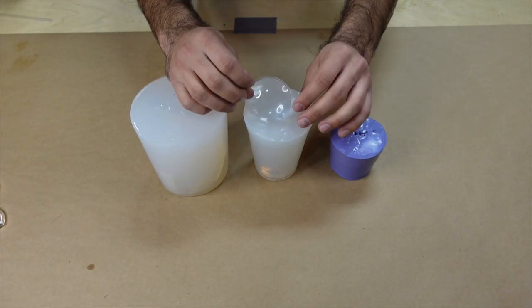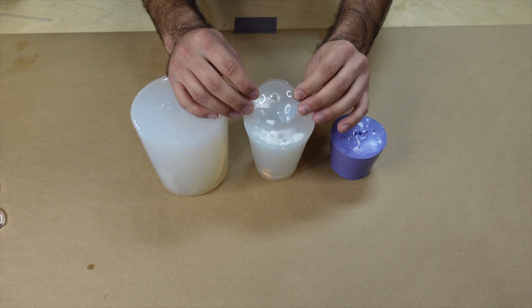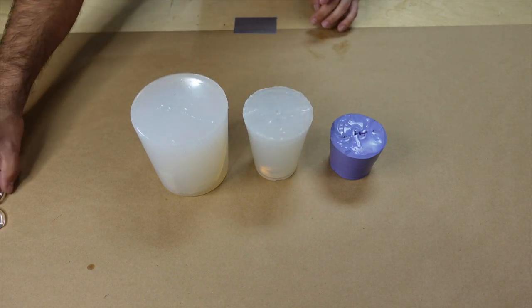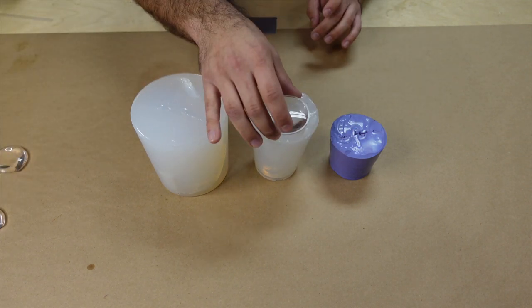Now lenses are pretty difficult because they have to be perfectly clear. They have to have no bubbles, no dust, no dirt. So it ends up being very difficult to get a perfect casting in one go.